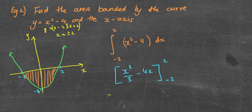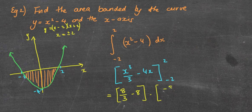Now we can substitute into it. 2³ is 8/3 minus 4 times 2 is 8. Put those in my brackets. Minus, I always put the brackets in there because when you have negatives going in, it can stuff things up. So it's -2 cubed is -8/3. -4 times -2 is positive 8.